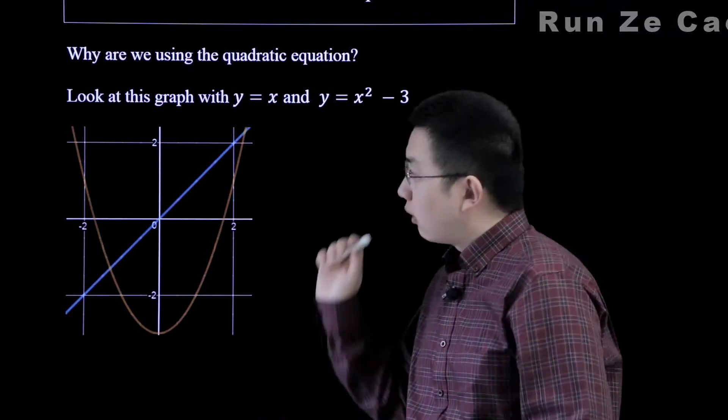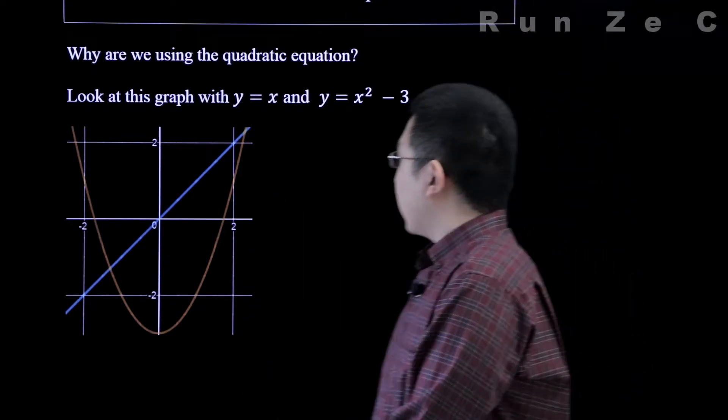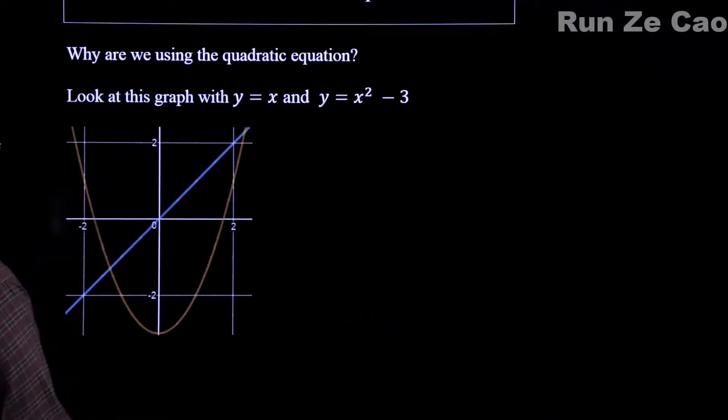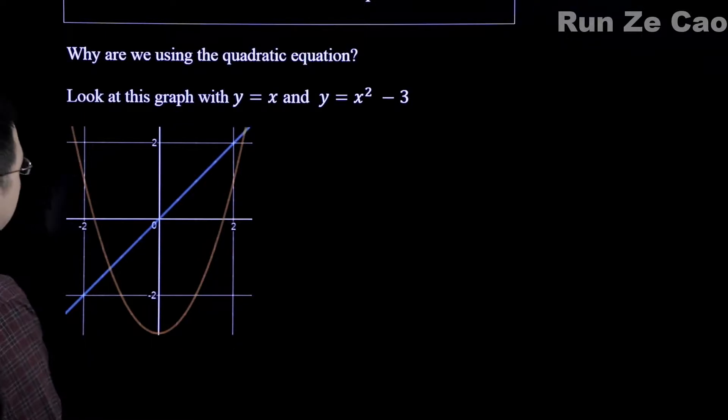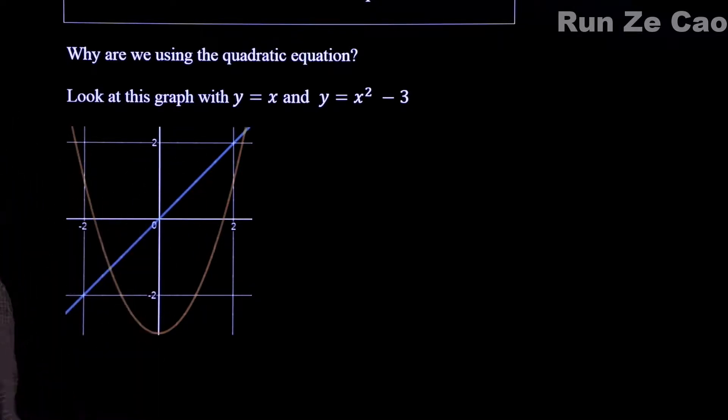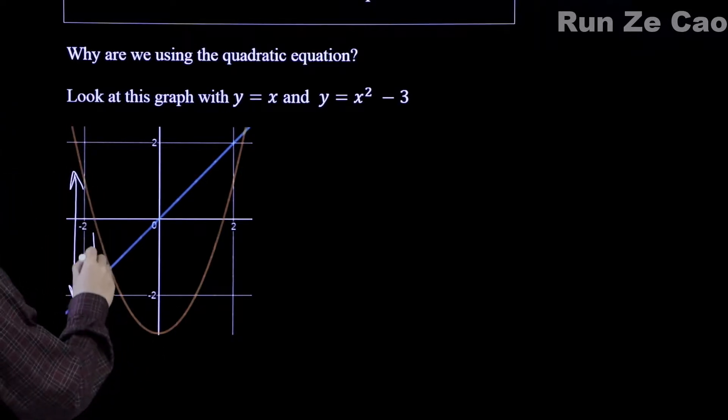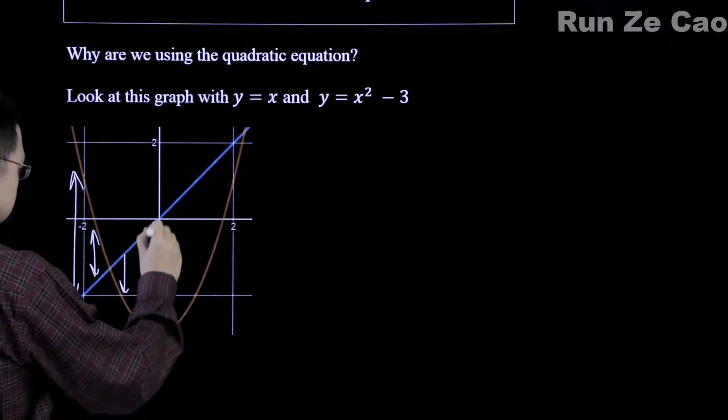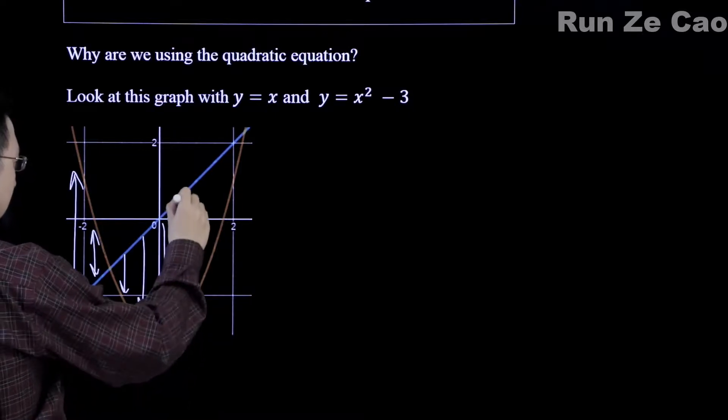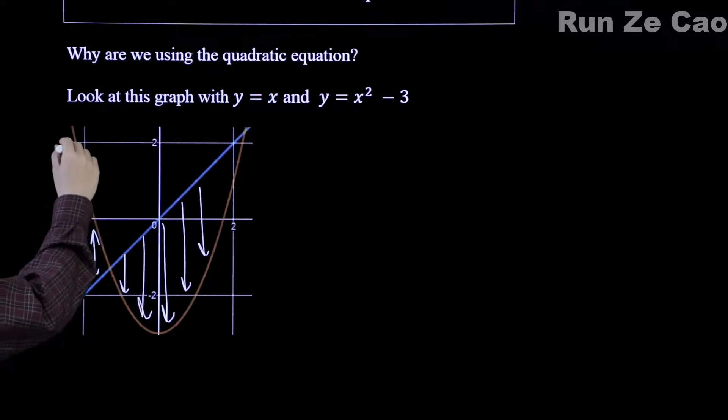So why are we using this quadratic equation? Well, behold this graph. In this graph we have y equals x and y equals x squared minus 3. There is something very interesting about this graph that I hope you can notice. How far apart are these two lines? The distance is this much, right? And here it's this much. What happens to find the actual distance here, like say from here this line to that line?